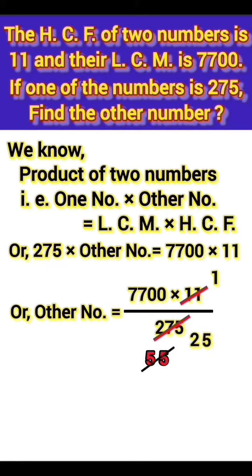11 fives are 55. Now we cancel by the table of 25. 25 ones are 25, and 25 threes are 75. 77 minus 75 equals 2. 2 and 0 are 20. 20 is not divisible by 25.